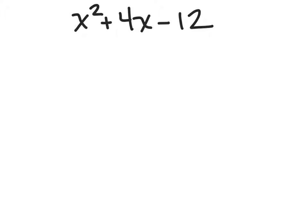In this case, we need to start by making sure that we understand who is a, who is b, and who is c. a is always the number in front of my x². In this case, there is nothing, which means there's an invisible one.